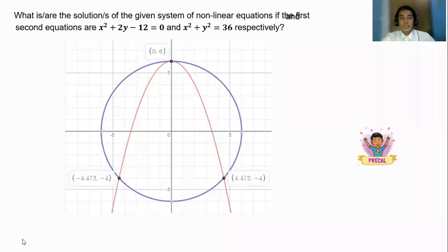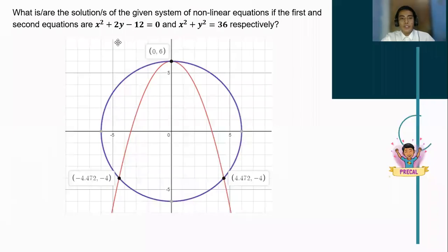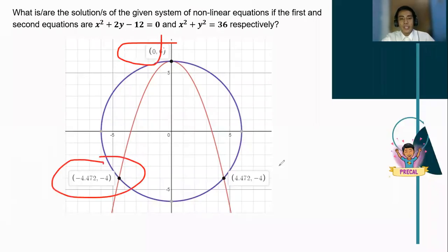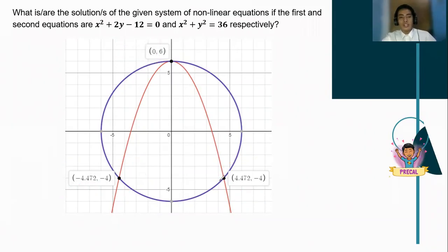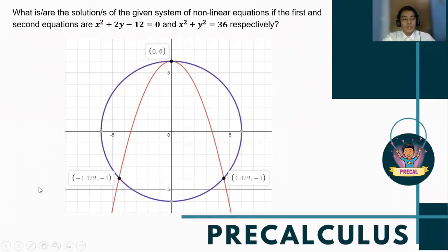Observing the graph, the points of intersection are negative 4.472 and positive 4.472, which are equivalent to negative 2√5 and 2√5. Using the graphical method, you can identify the intersections of the points. However, in the module assessment, you should use the algebraic method even if you graph it.